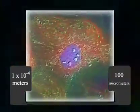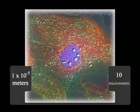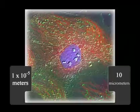Zooming in by another factor of 10, we're now at 10 to the minus 5 meters, or 10 millionths of a meter, and we can see one kidney cell and its central nucleus.